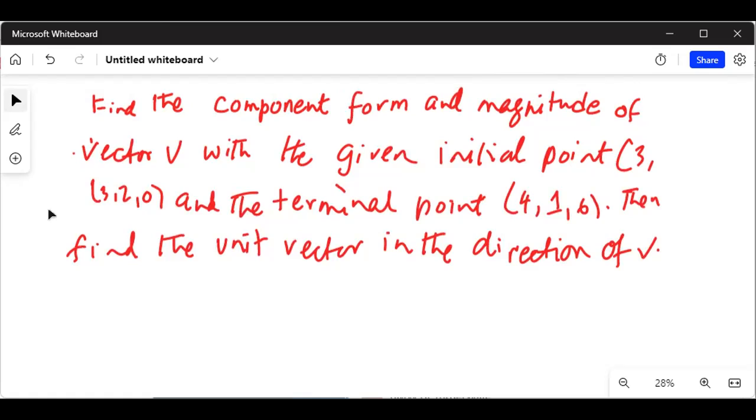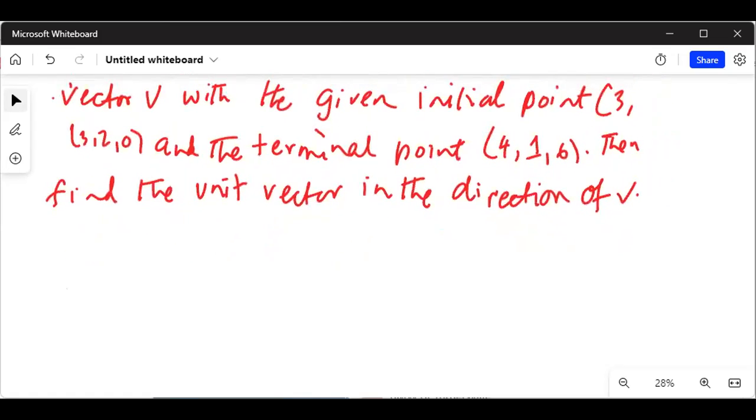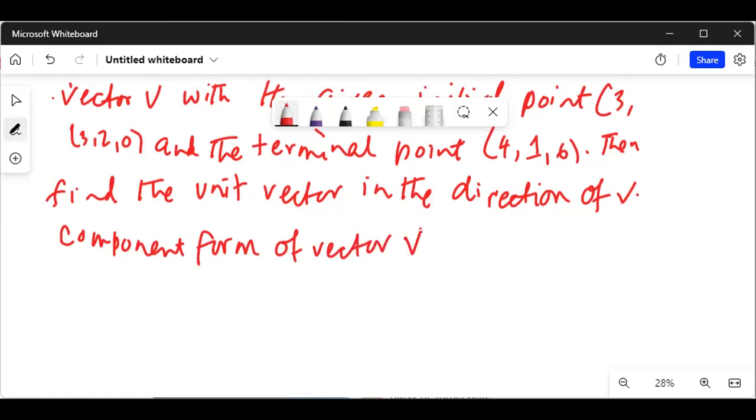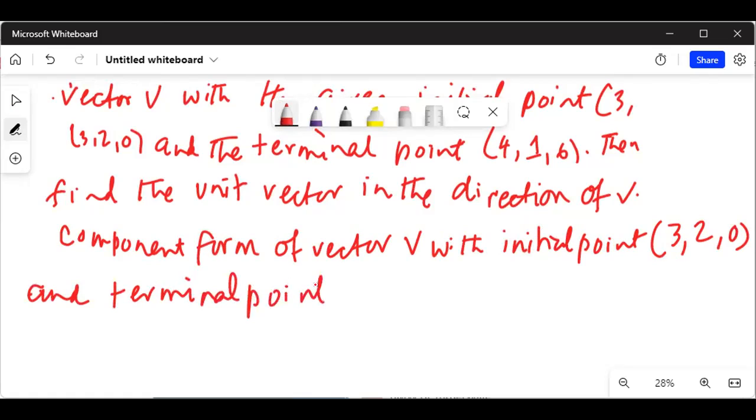So first we will find the component form. Component form of vector V with initial point (3,2,0) and terminal point (4,1,6).